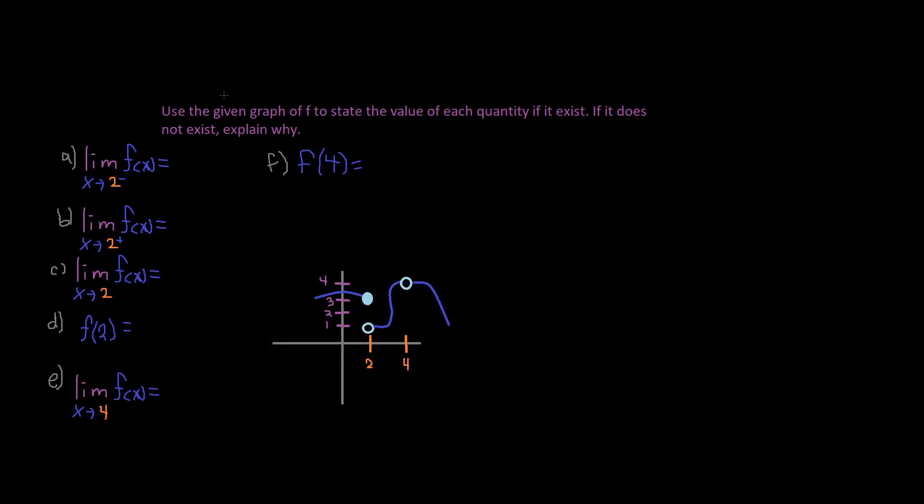Alright, let's take a look at this problem. Use a given graph of f to state the value of each quantity if it exists. If it does not exist, explain why. Alright, so first thing is first, we gotta check out all these limits.